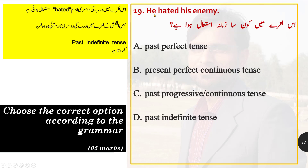Option number 19: 'he hated his enemy.' Which tense is used in this sentence? Past perfect, present perfect continuous, past continuous, or past indefinite? The verb 'hated' is the second form of 'hate'. When the second form of a verb is used in a sentence, it is past indefinite tense. So option D is correct: past indefinite tense is used in this sentence.